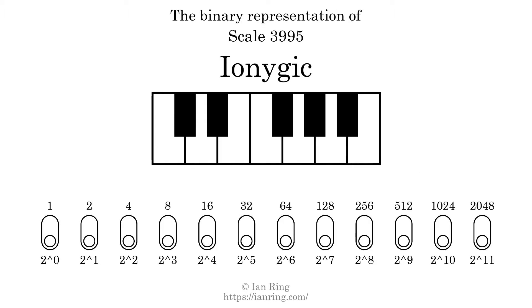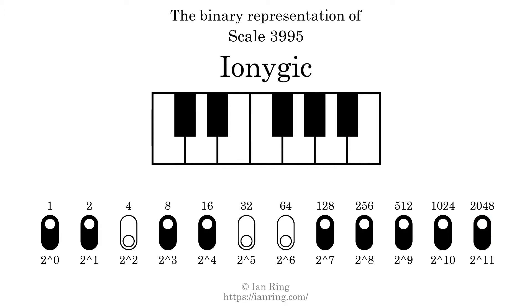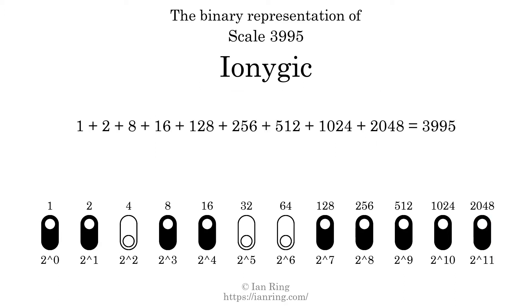The binary representation of this scale is determined by mapping tones of the scale to binary digits. Each binary digit represents a power of 2. To get the scale number, we add the powers of 2 together. The powers of 2 that are present in the scale, all added together, equals 3995. That is why the scale number, in decimal, is 3995.